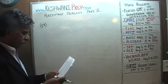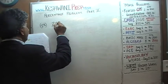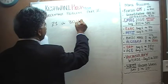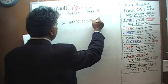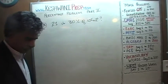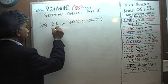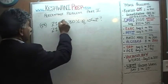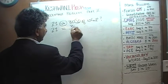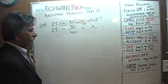Number 13: 21 is 30% of what? Let's first do it algebraically. 'Is' means equals, 30% means over 100, 'of' means times, and here is our x.